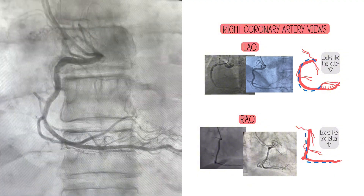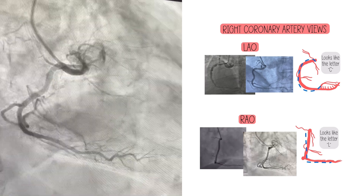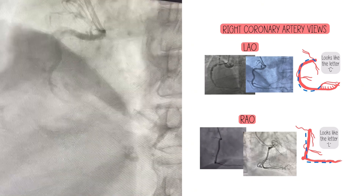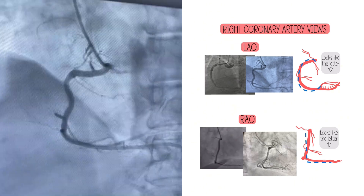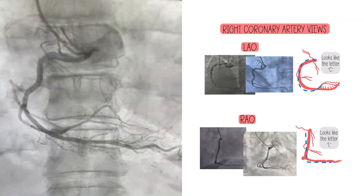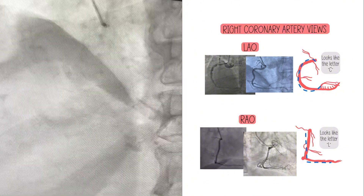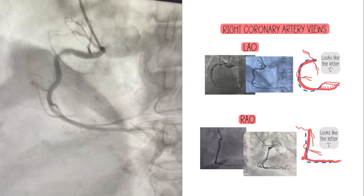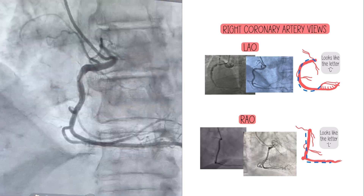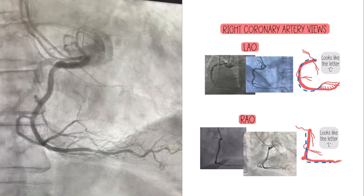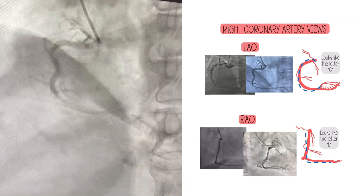First up are the views. In the RCA views, we're going to take those straight LAO and RAO views — so that means like LAO 20 to 30 or RAO 20 to 30 with no skew, no cranial or caudal. These are usually the ones we start out with. We'll also talk about when you're going to use a skewed view for the RCA, because you're not going to all the time — and that depends on dominance.